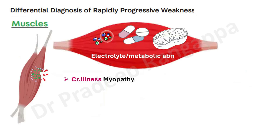So this is the broad overview — when neuromuscular disorders are asked, differentiate based on central causes, motor neuron causes, peripheral nerve causes, neuromuscular junction causes, and muscle causes. It is easy to remember if you keep these pictures in the back of your mind.